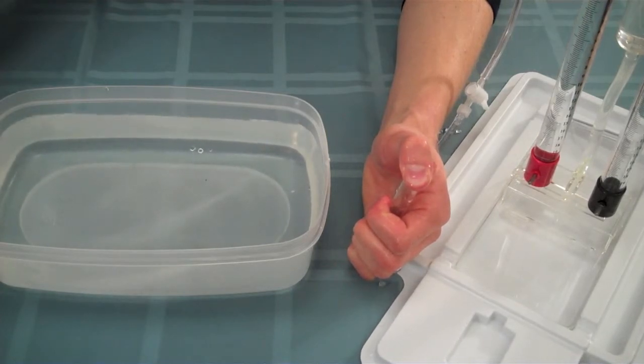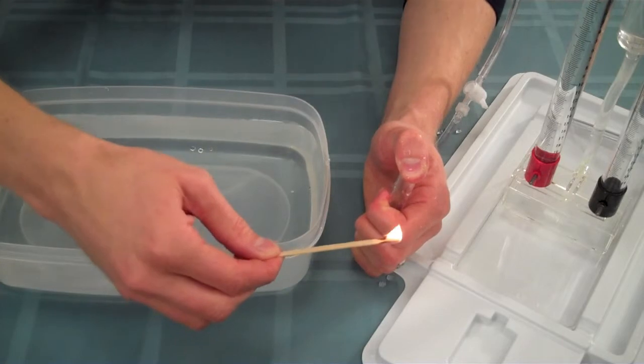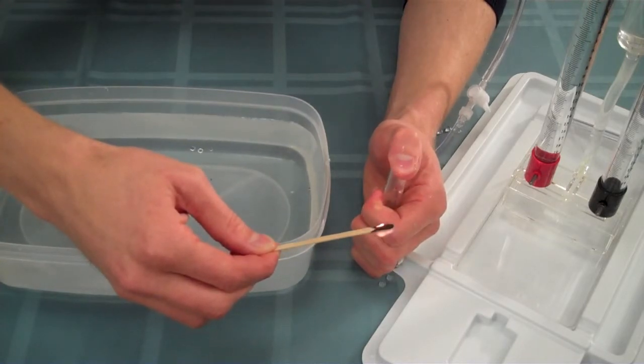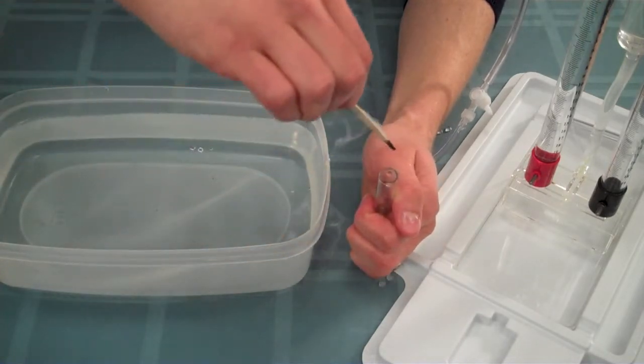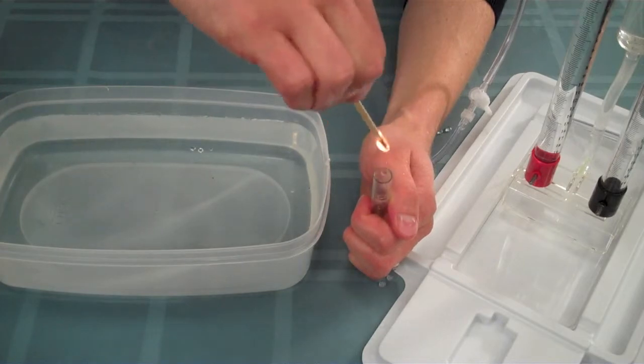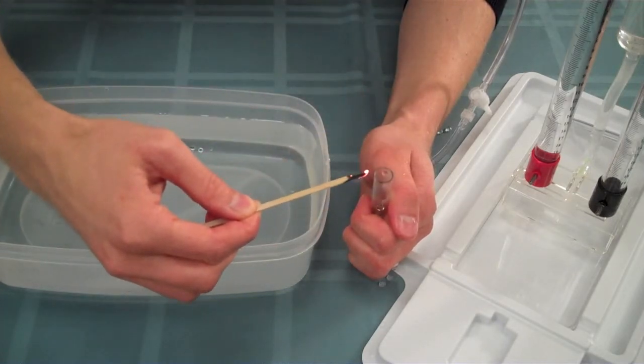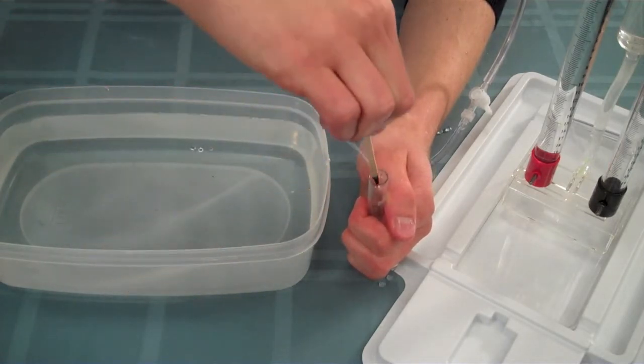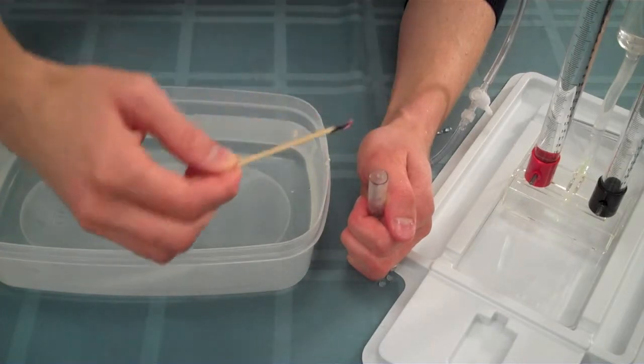Light a splint, let it burn for a moment, then blow it out. While the splint is still glowing, remove your thumb from the test tube and insert the splint. It should reignite. This result indicates that the gas that was in the storage column must be oxygen.